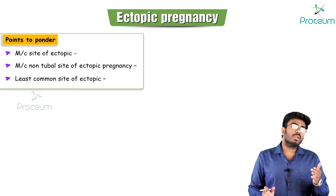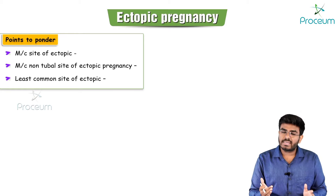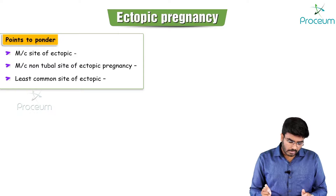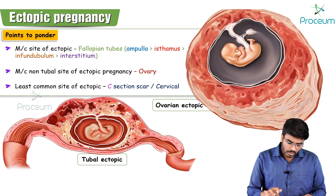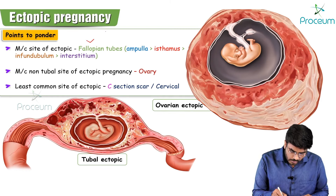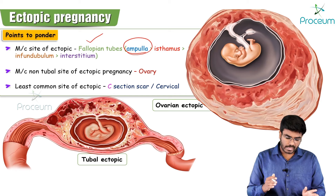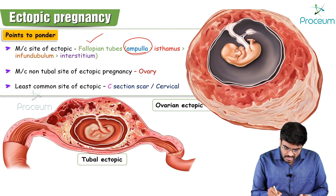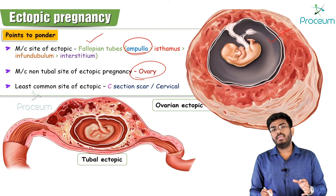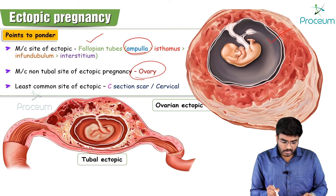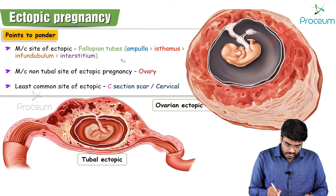The most common non-tubal site of ectopic pregnancy — meaning other than the fallopian tubes — is the ovary. The least common site is a C-section scar or cervical ectopic. To summarize: most common site is the fallopian tube (ampulla being most common within it, followed by isthmus, infundibulum, and interstitial); most common non-tubal site is the ovary; least common is C-section scar or cervical ectopic.